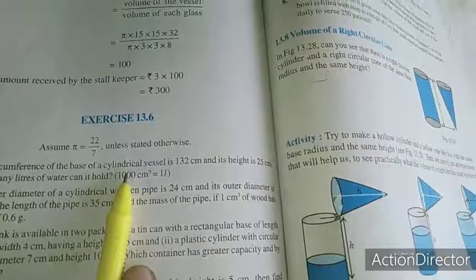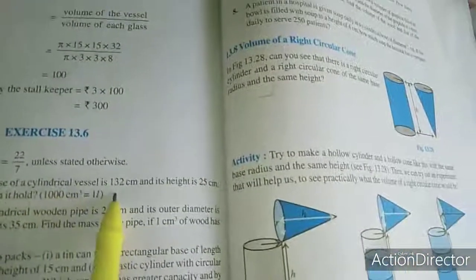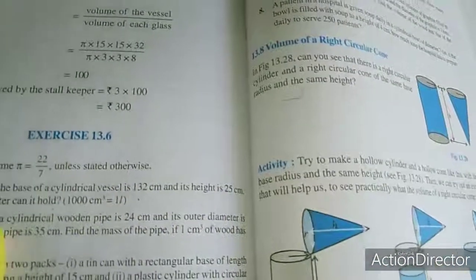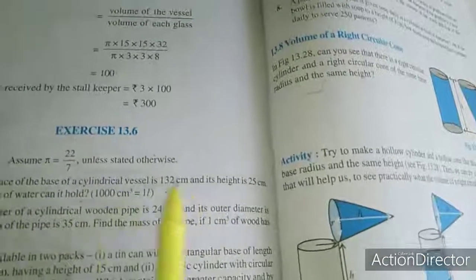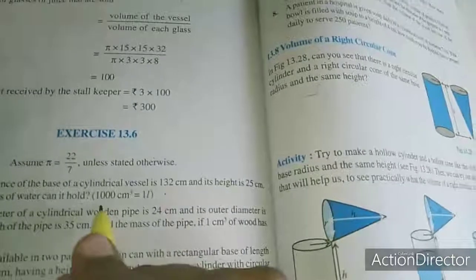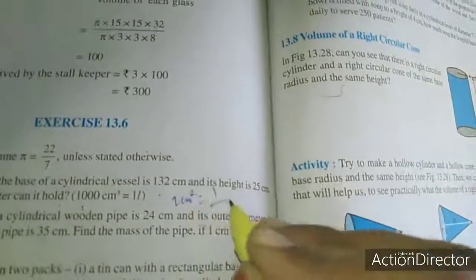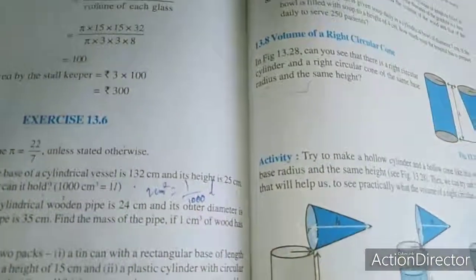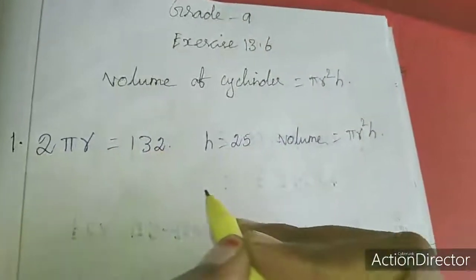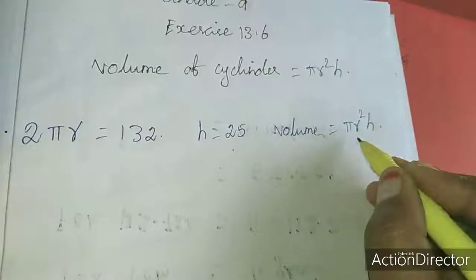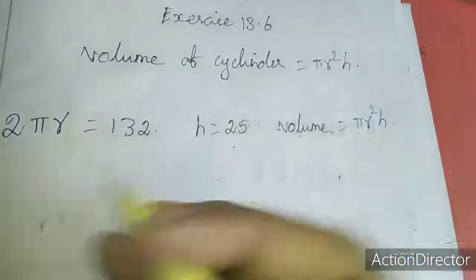The circumference of a cylinder is 2 pi r. We have to find the volume of the cylinder. First, we need to find the radius. To change to liters, 1000 cubic centimeters equals 1 liter. We will solve for r: 2 pi r equals 132.